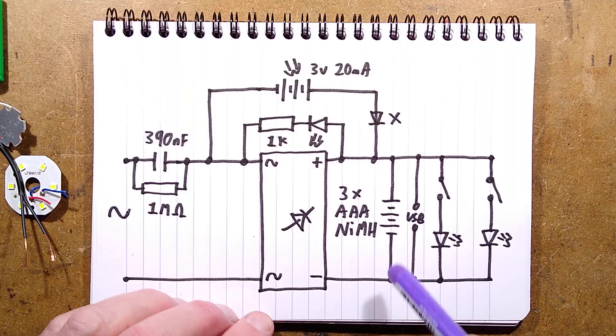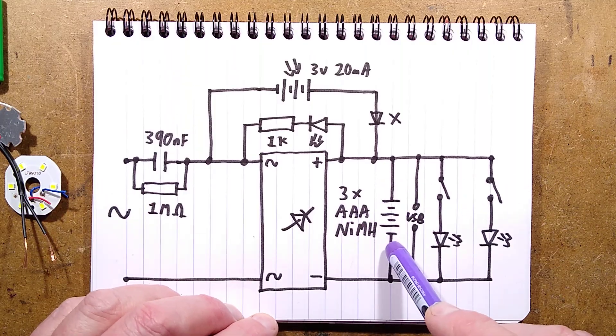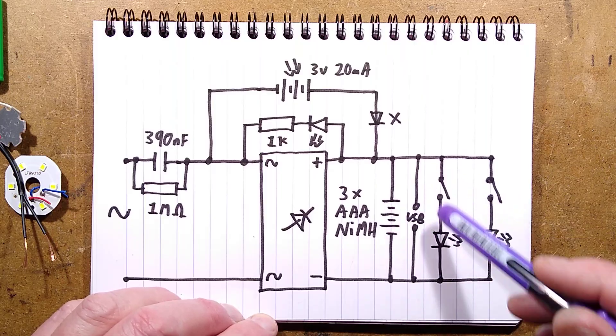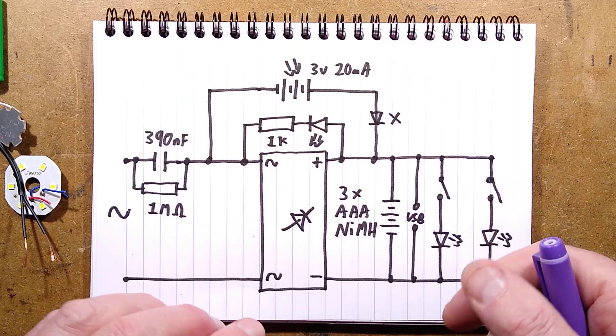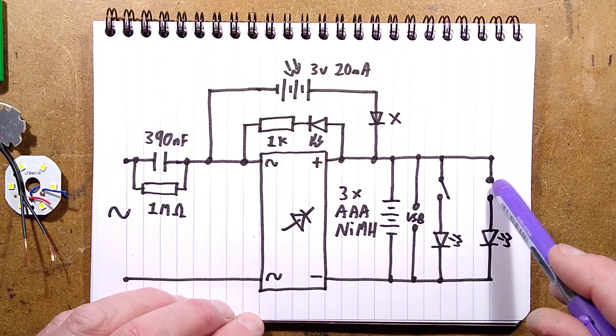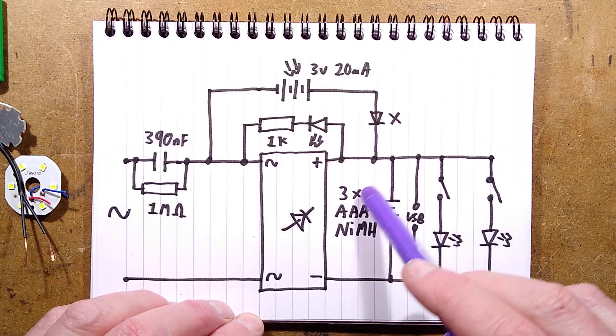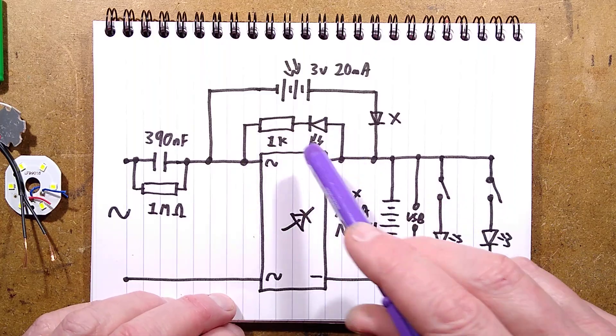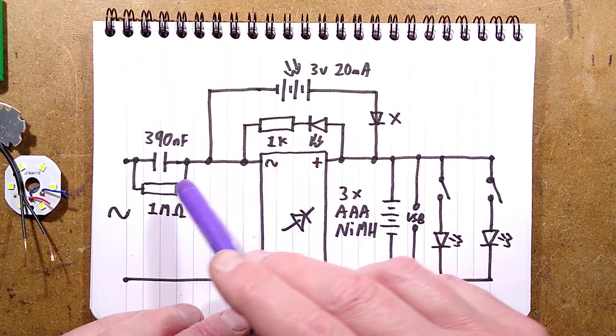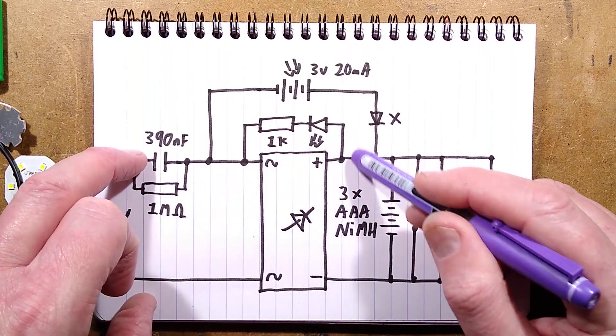There's the stack of cells whatever they are, there's the USB port, and there's the LEDs for the spotlight and the area light with their switches but no resistors because they're just relying on the impedance of the cells.